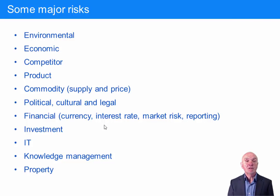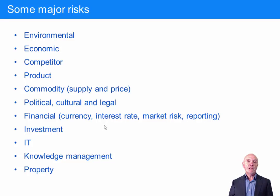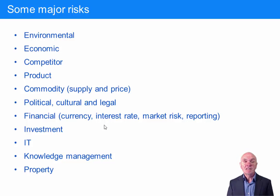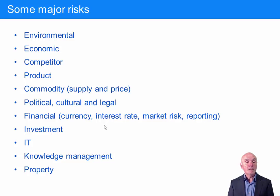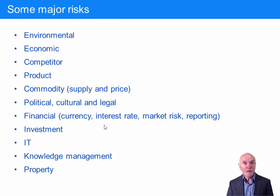Competitive risk: a competitor has a breakthrough and comes out with a fantastic product — you're going to be in difficulty. Product risk: maybe the product has to be withdrawn. For example, cars have to be recalled because the airbag is liable to go off for no particular reason. Commodities supply and price: some rare earth elements are in short supply, and the supply comes from only one or two countries. These are vital components in what you're making, so you may have price shocks or the supply may be cut off.